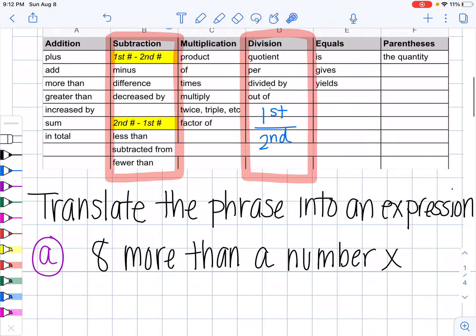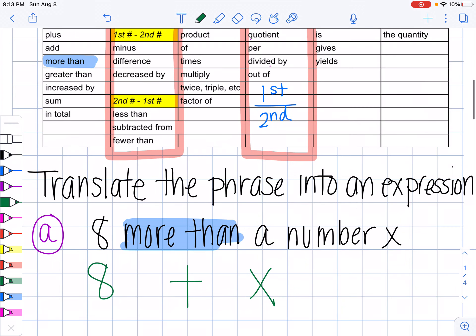So translate the phrase into an expression. Eight more than a number X. So I want to look and see if I can find more than. More than here is right here, which tells me that this is represented by addition. So I'm going to write eight more than we know means plus and a number X. I literally just write it X like this. And this is my answer. That's it.